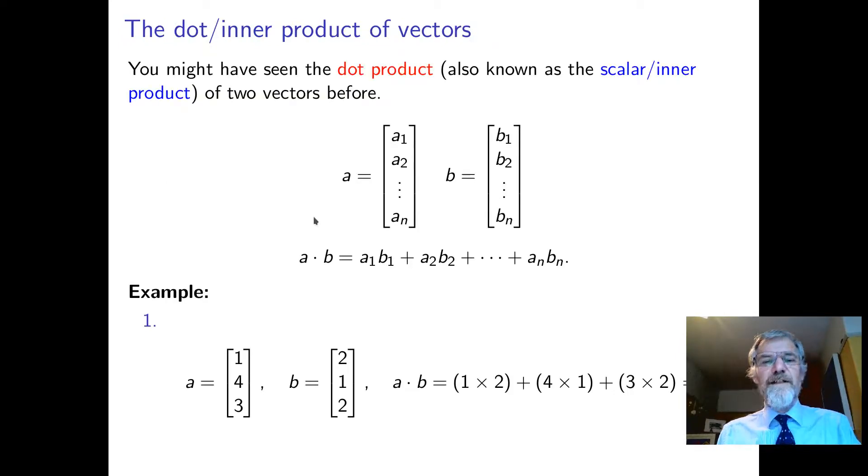Let's look at the dot product of vectors. You know this dot product, or scalar product, or inner product. If we're given two vectors, all we do is multiply the corresponding elements and then add them up, giving us a scalar answer, a number. So a dot b is a_1 b_1, a_2 b_2, and so on. For example, if we have these two vectors, the dot product is 1 times 2 plus 4 times 1 plus 3 times 2.